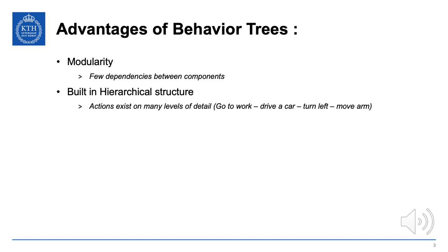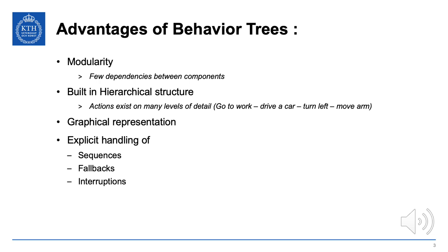Turning left with a car probably includes sub-actions of moving your arm, braking, applying the gas, and so on. Actions exist on many levels, and it's nice to have a task switching structure that captures this hierarchical structure in a natural way. Behavior trees do this. They also have a fairly straightforward graphical representation, which is good when you want to communicate or design your solutions, and they have explicit handling of sequences, fallbacks, and interruptions.